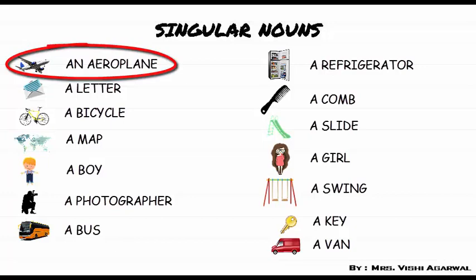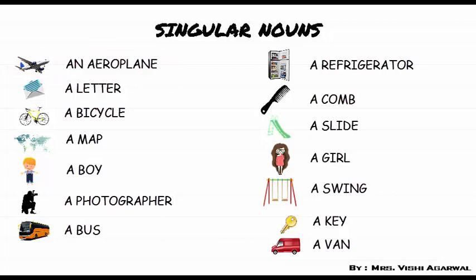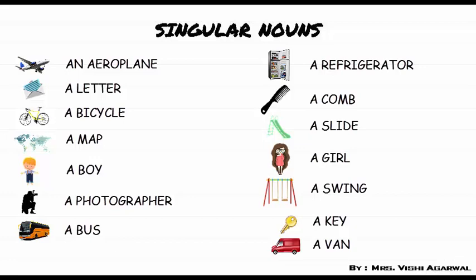And with all these words we have used only 'a'. Why so? Because in aeroplane the first letter is a vowel. Vowels are A, E, I, O, U. So we have used 'an' before aeroplane. But the rest of the words are starting with consonants — letters other than the vowels — so we have used 'a' before all these words.